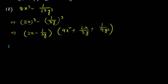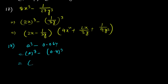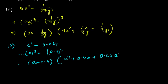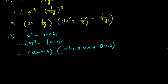Question 18: a³ – 0.064 = a³ – (0.4)³, so it gives (a – 0.4)(a² + 0.4a + 0.16). Note: the square of 0.4 is 0.16, not 0.64.